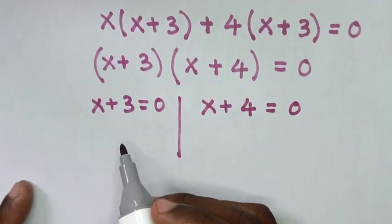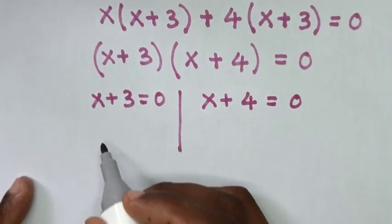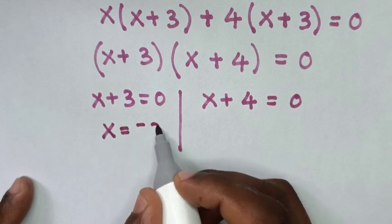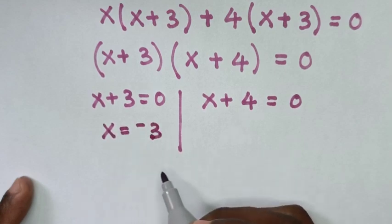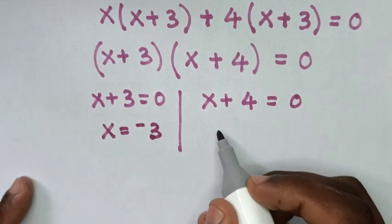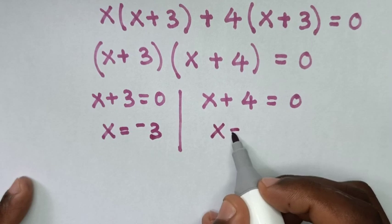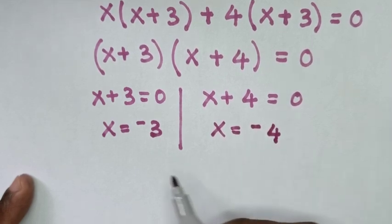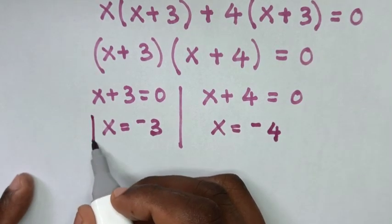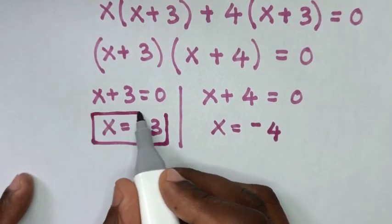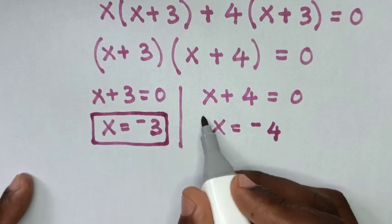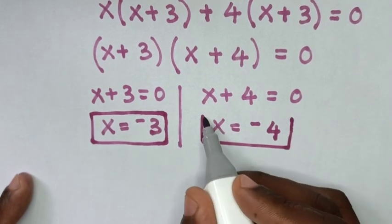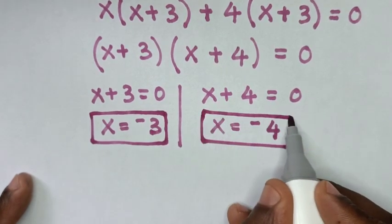Then we take 3 to the right side, so it will be x is equal to negative 3. And here we take 4 to the right side, so it will be x is equal to negative 4. So this is the first value of x, which is negative 3, and this is the second value of x, which is negative 4.